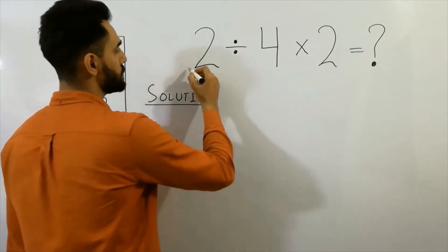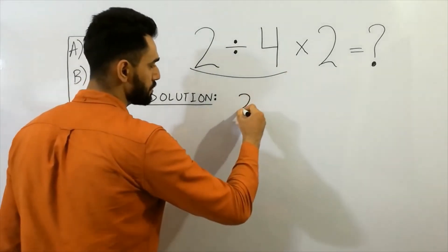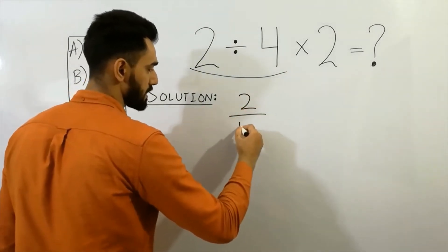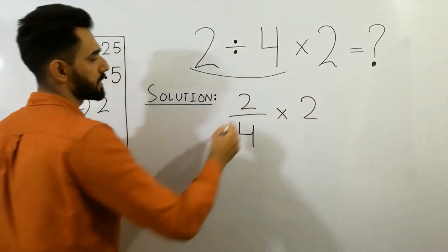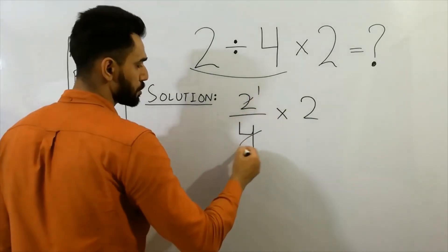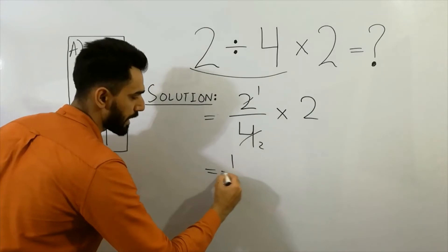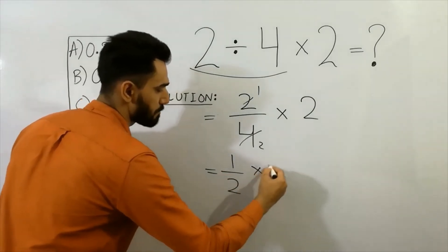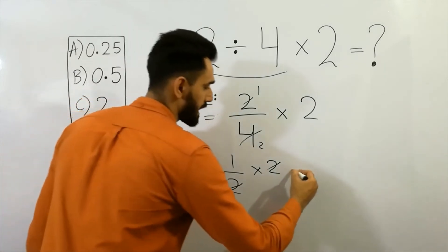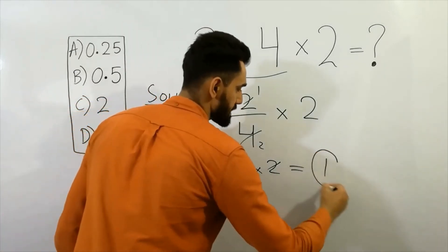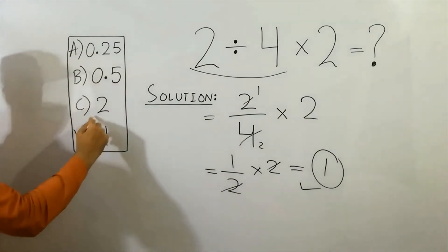First, you have to do the division — must remember. Two divided by four multiplied by two. Next step: two ones are two, two twos are four — we get one-half multiplied by two. The twos cancel and we get one. So one is the right answer — option D is correct.